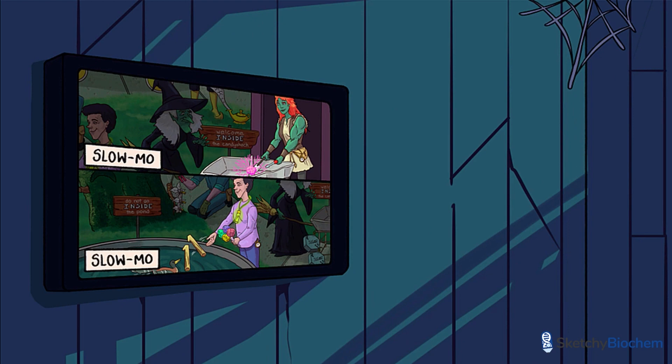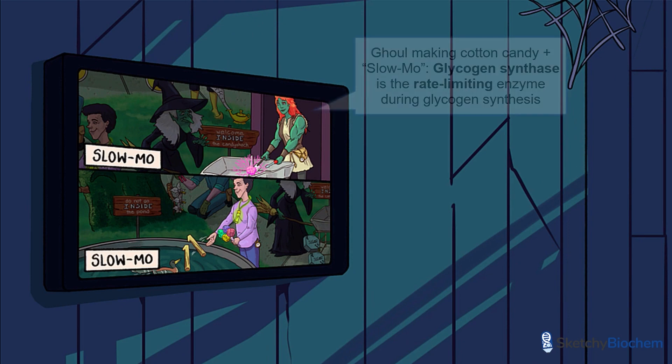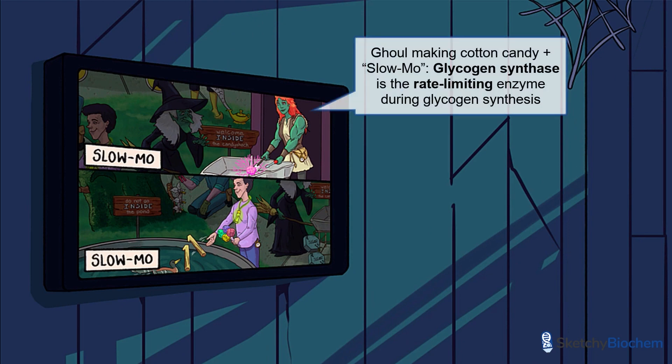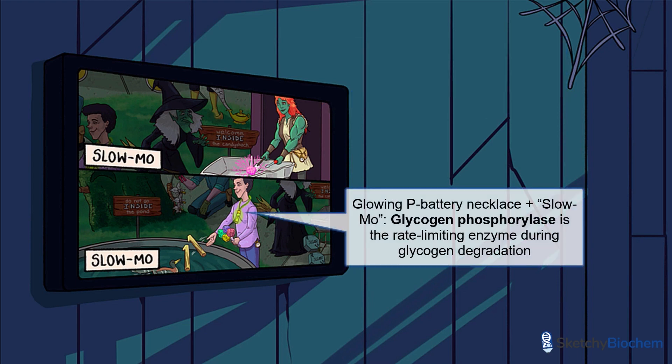Looks like we've got some action on the TV to the left. Up top is a ghoul making some cotton candy — recall that she's glycogen synthase, which catalyzes the rate-limiting step during glycogen synthesis. Down below is a guy with a glowing necklace powered by a P battery. He's glycogen phosphorylase, the enzyme that catalyzes the rate-limiting step during glycogen degradation.